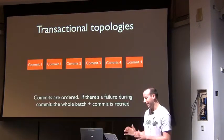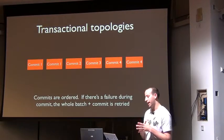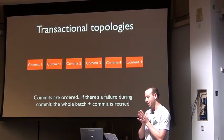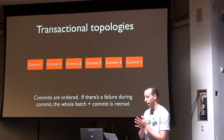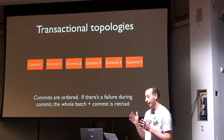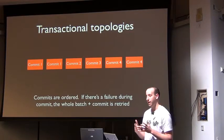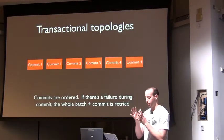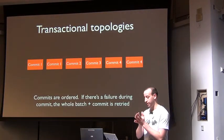The key thing that transactional topologies provide you is that the commits are guaranteed to be strongly ordered. So if there's ever a failure during a commit, it'll retry that commit, but it'll never move on to the next commit until that commit succeeds.